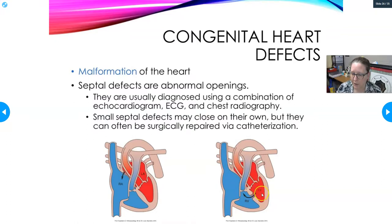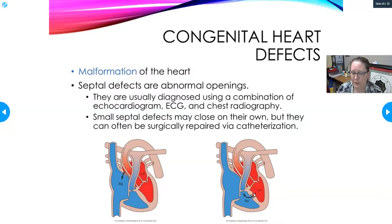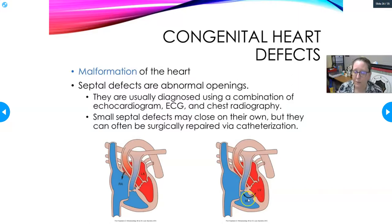Signs and symptoms depend on the size of the defects. Diagnosis uses a combination of echocardiograms, EKGs, and chest radiography. Small septal defects can sometimes close on their own, but they often need to be surgically repaired — which can now be done via catheterization by inserting a catheter through a main artery and patching the hole. Some defects aren't even detected until growth spurts in the teen years, if the holes are small and haven't closed.